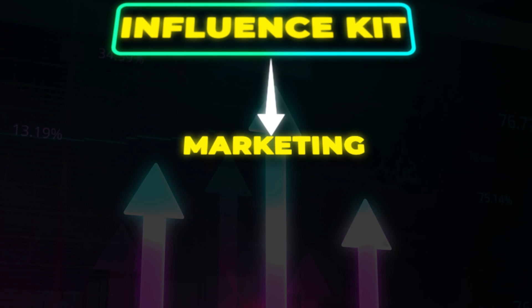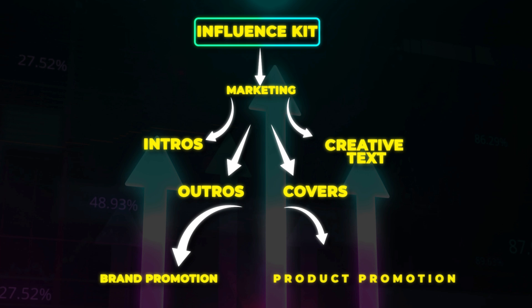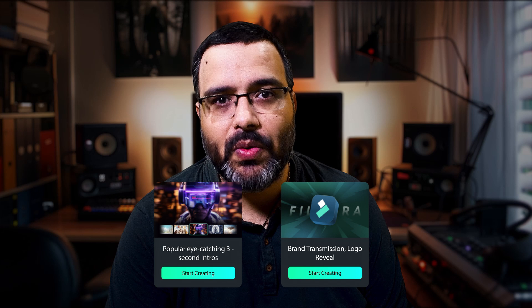Make sure to check out the Templates section for more intro options. Now let's talk about Influence Kit — it is very well crafted for marketing, where you can create a brand intro, logo intro, outro, covers, creative text, and lots more. Currently it has intro maker and logo intro maker, with upcoming features like outro maker and thumbnail maker. Download the latest version of Filmora from the link in the description and explore the new features. See you in the next video!